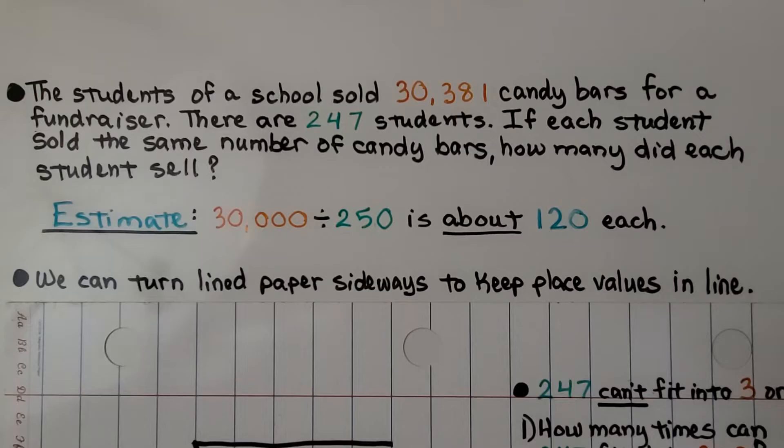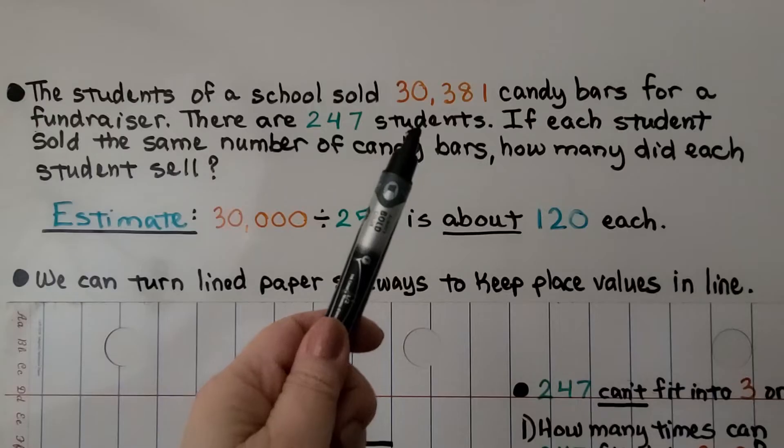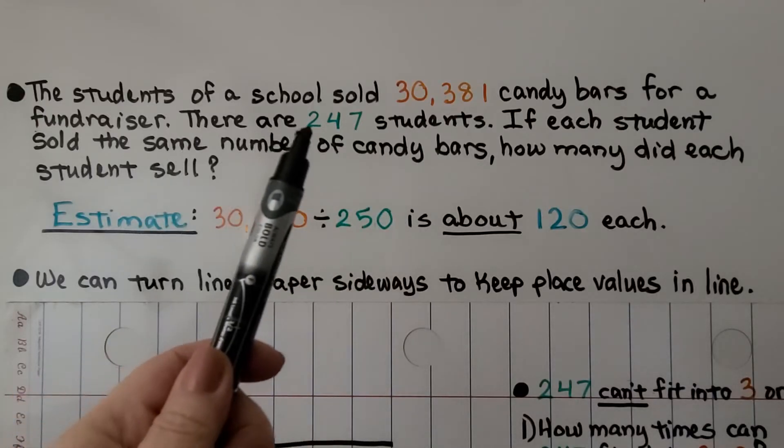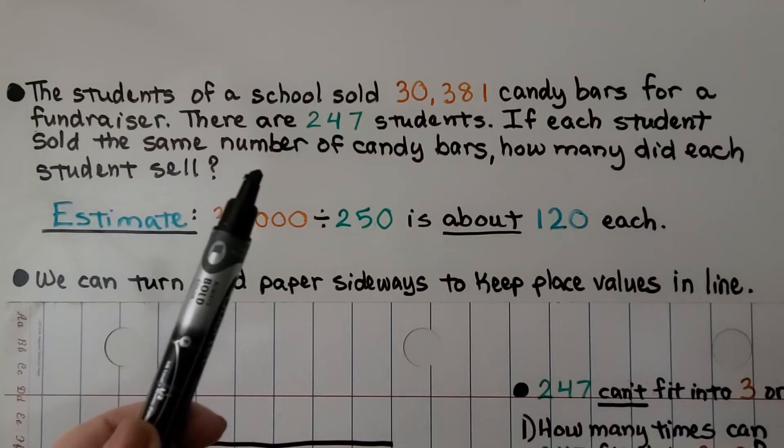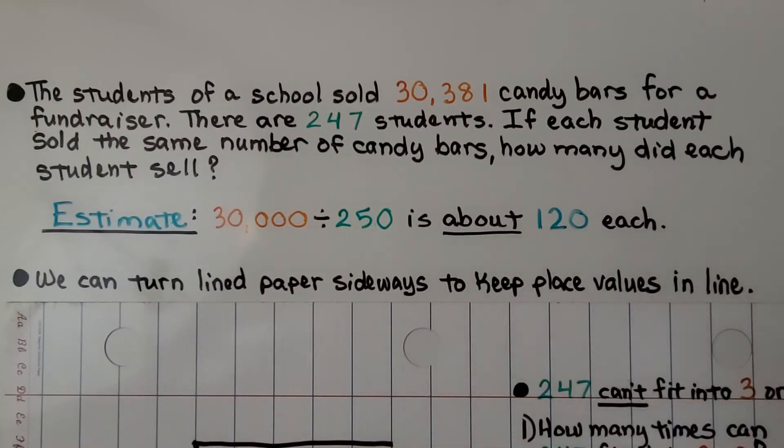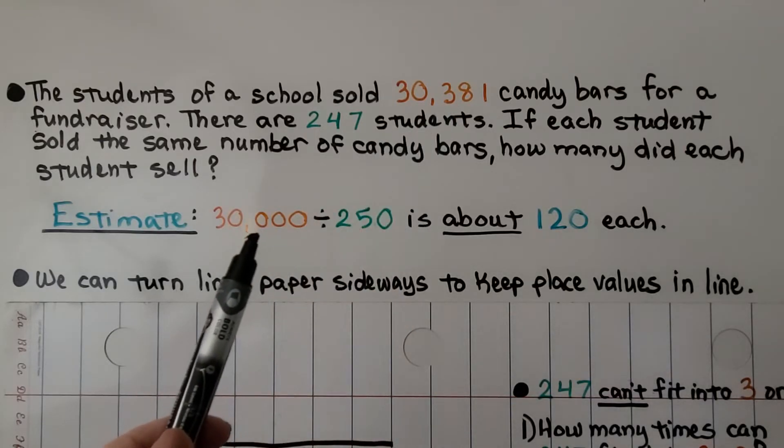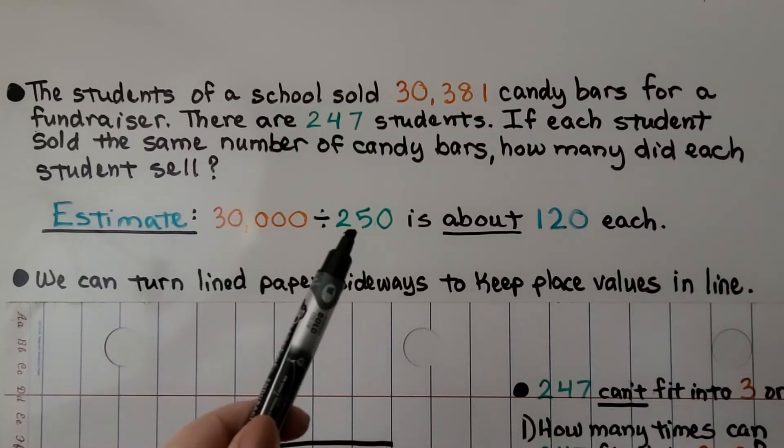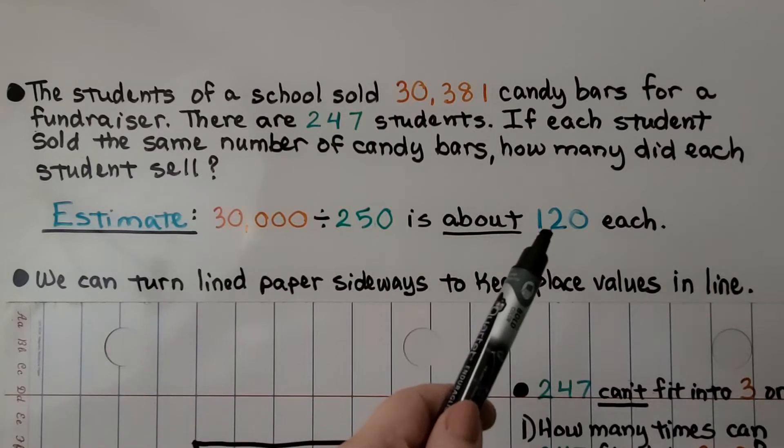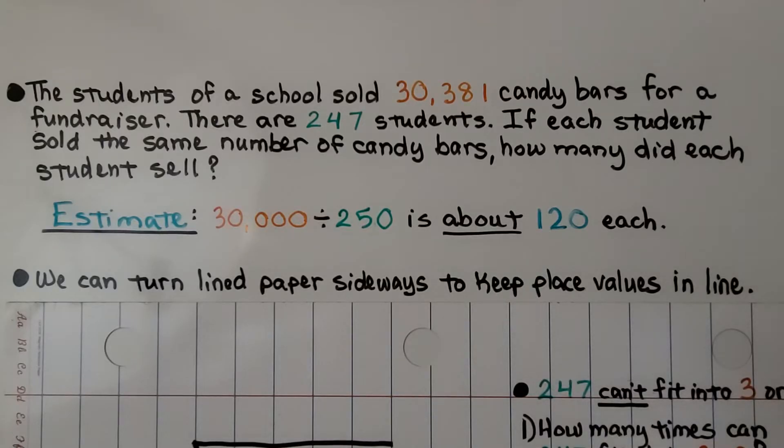In the first part of this lesson, 5.1a, we estimated this problem. The students of a school sold 30,381 candy bars for a fundraiser. There are 247 students. If each student sold the same number of candy bars, how many did each student sell? We estimated about 120 candy bars for each student. Now we're going to do it to get an exact answer, and we can turn a sheet of lined paper sideways to help us keep our place values in order.